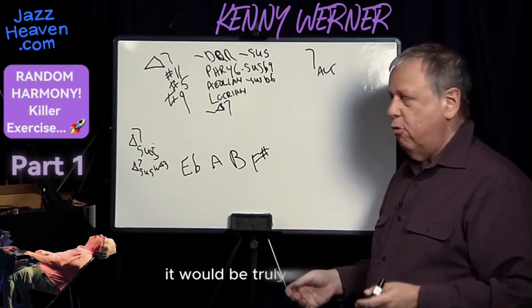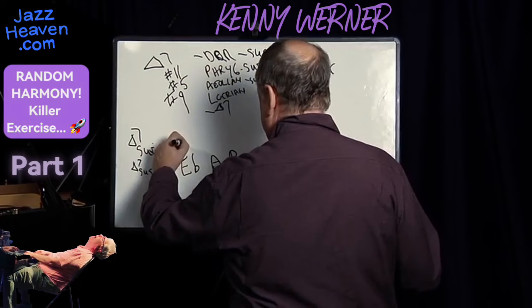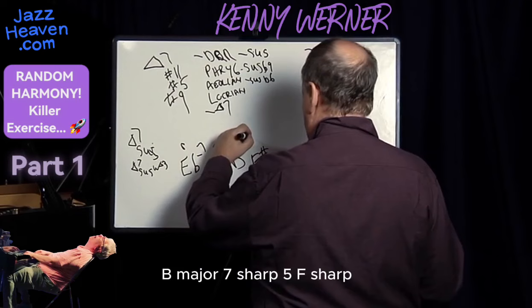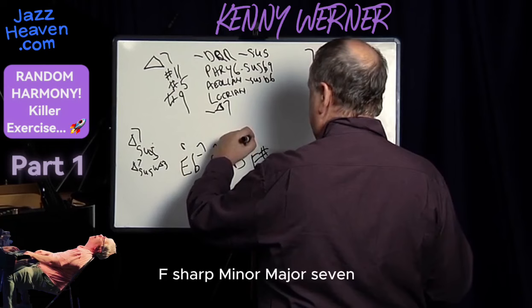E-flat: Dorian — that's minor 7. A: Aeolian — minor 7 flat 6. B: major 7 sharp 5. F-sharp: minor major 7.